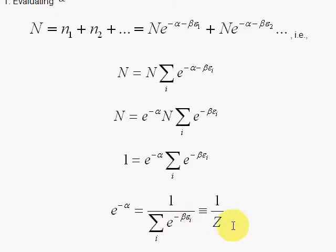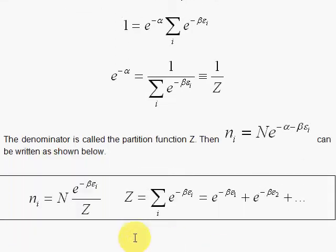That sum, by the way, is called Z, the partition function, and our result here is the number of particles in the ith state is equal to the total number of particles times this e to the minus beta epsilon sub i, divided by the partition function. And the partition function has this neat property, you're summing over all the e to the minus beta i's, so e to the minus beta epsilon 1, plus e to the minus beta epsilon 2, etc.